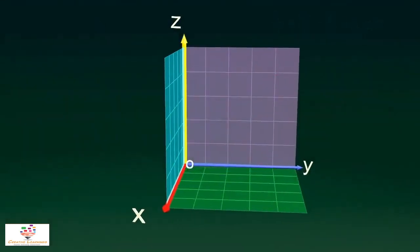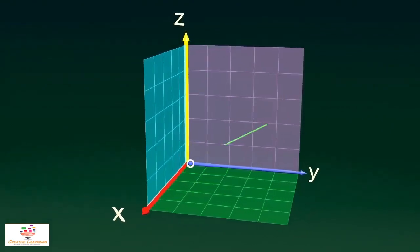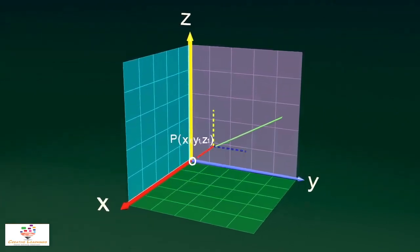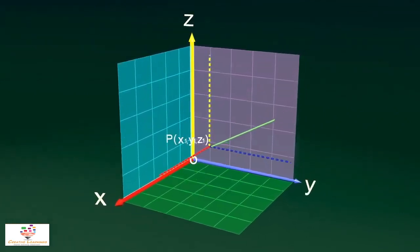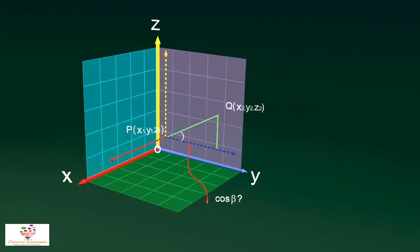Now, if someone wants to find direction ratios of a line joining two points P and Q, one can consider imaginary coordinate axes parallel to the original ones at any point P or Q, and can find the direction cosines similar to the previous one.